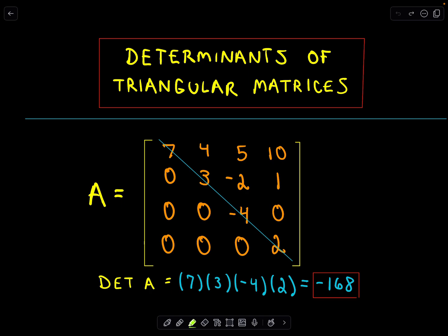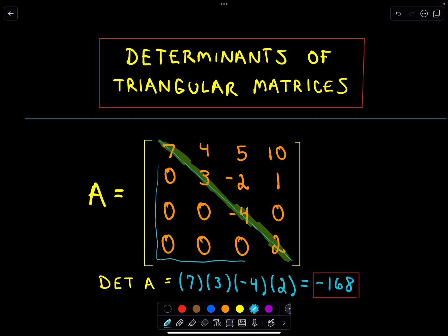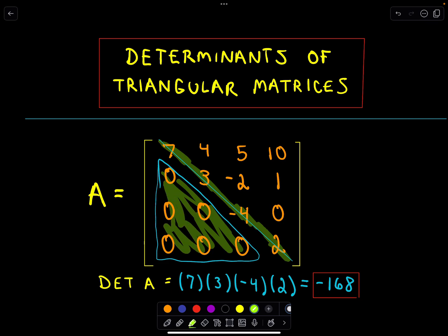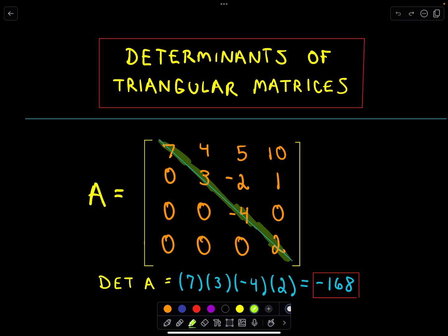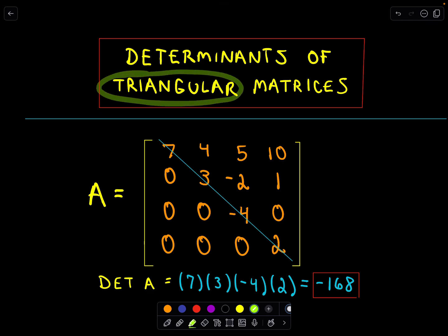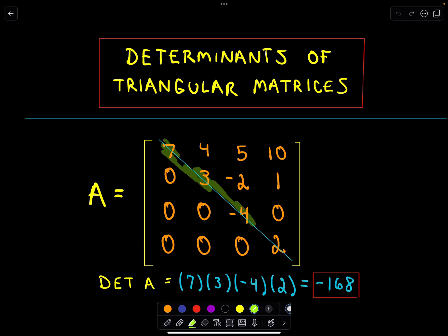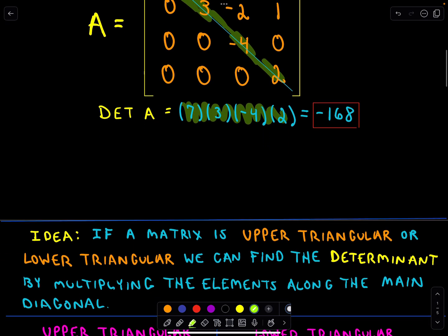If we look at matrix A, notice if you look at the main diagonal, we've got some values along that main diagonal. The important thing to notice is, if you look at all of the values below that diagonal, those are all zeros — and that's going to be an important feature. If you have a matrix that satisfies that condition, we'll say it's upper triangular. And when that happens, we can simply multiply the elements along the diagonal to find the determinant. That's the magic.